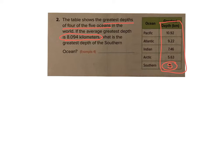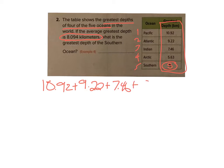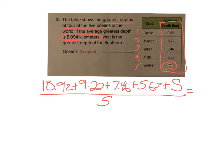We know that to find the average we're going to add all the individual values together and then divide by however many there are. There are five oceans, so let's put this into an equation. We have 10.92 plus 9.22 plus 7.46 plus 5.63 plus s, and if we divide that by five, that's going to give us the average of 8.094. Let's add the known values together and see what we get.